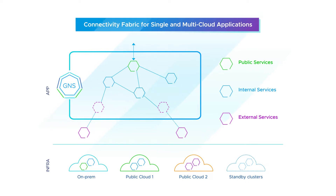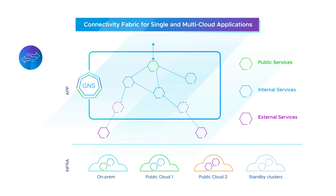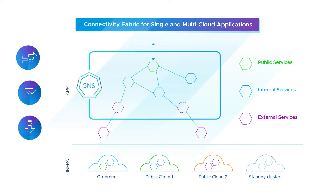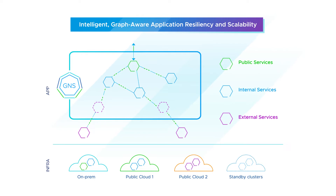Tanzu Service Mesh provides full-stack application connectivity services, enabling application mobility, high availability, and automated application rollouts and upgrades. Tanzu Service Mesh controls north-south traffic from end-users at the application edge through mesh ingress and egress, and east-west traffic between application workloads, APIs, and data.